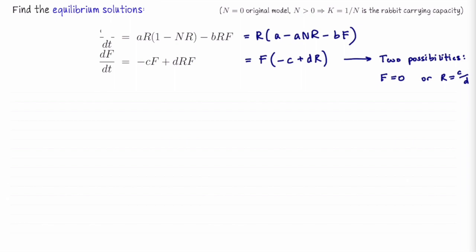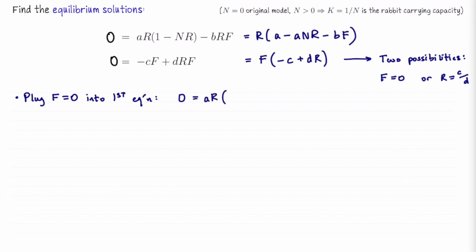We want our derivatives to be zero for equilibrium solutions. Looking at the right-hand side of the first equation when we plug f equals zero into it, the bf term vanishes. We get zero equals a times r times (1 minus n times r). That tells us either r equals zero, or r equals 1/n, which is actually k, the carrying capacity.